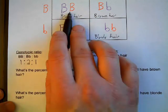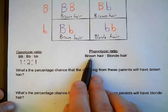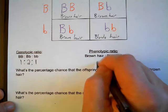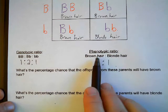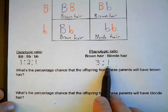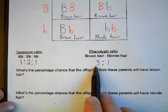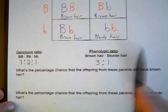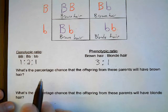Now to figure out the phenotypic ratio, I need to count the number of genotypes that would give brown hair. That's why writing in these phenotypes makes it really easy. I see three combinations that would give brown hair, and I only see one allele combination that would give blonde hair. So the phenotypic ratio would be three to one. We always list the phenotypic ratio as dominant to recessive — brown is the dominant trait, so three of those to one set of alleles that would code for blonde hair.